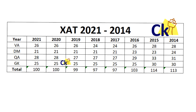Zad has always been notorious for that. Every year Zad used to change the paper pattern — this is the normal conception in the market. But if you look at the last 7 years of papers to get an idea of what kind of paper is coming in the Zad exam, let's look at the verbal section.